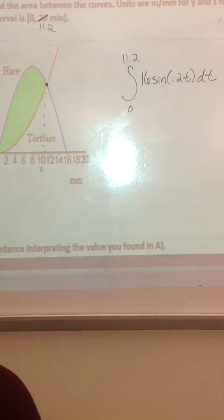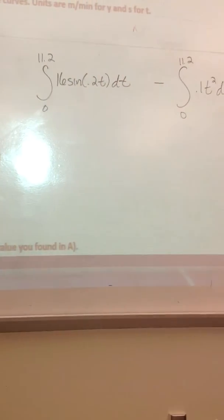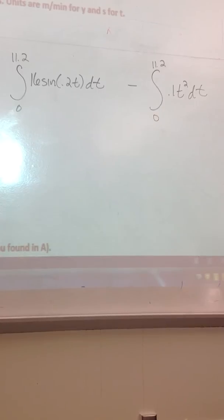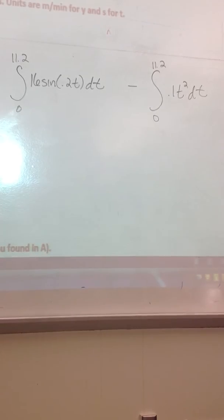You could write the problem as one integral sign with those two subtracted. It's accurate to write it that way. But in terms of our discussion, I think it works a little better to think about, well, first I'm finding the distance the hare moved, and then I'm finding the distance that the tortoise moved, and then you're subtracting.